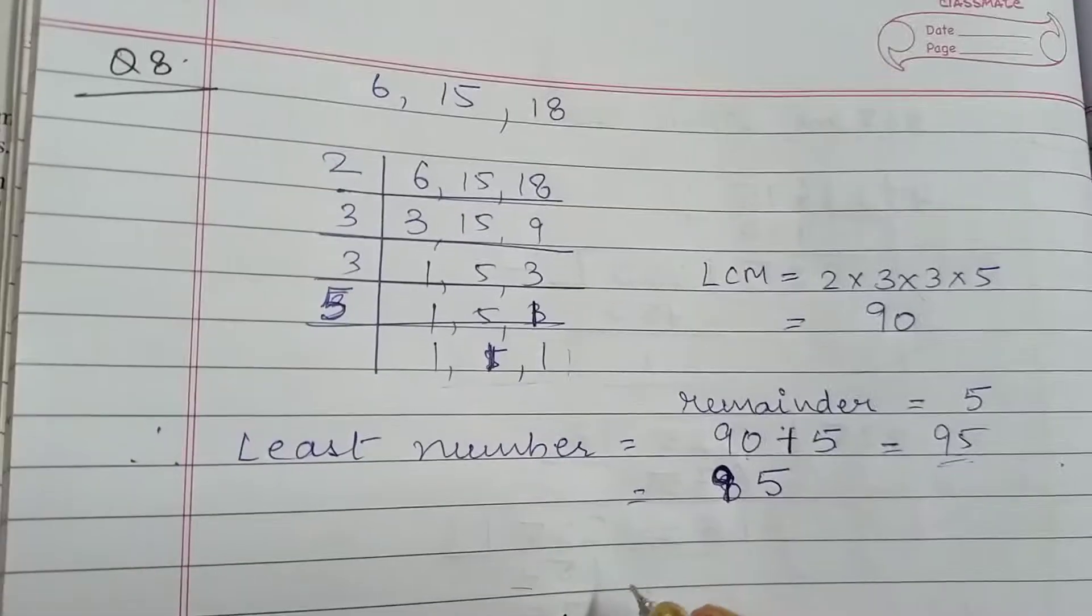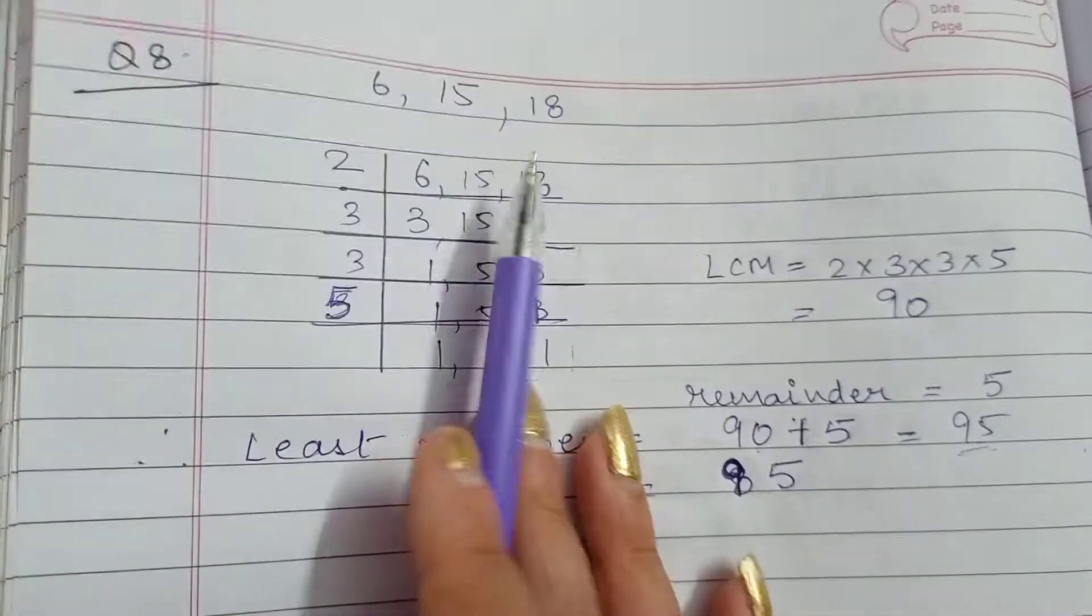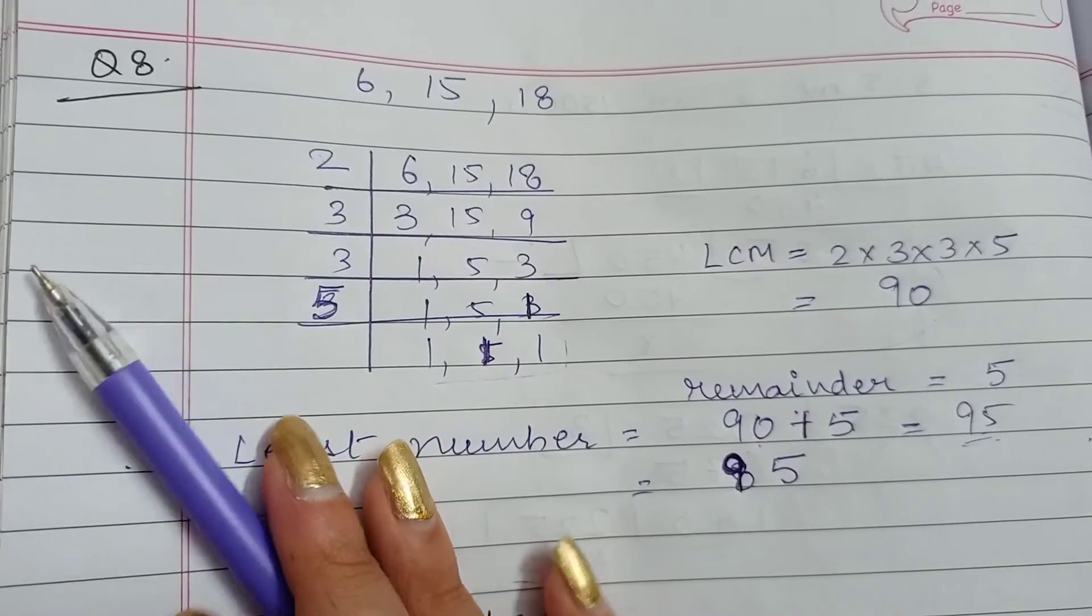95 is the least number which when divided by these 3 numbers will leave the remainder as 5. So this was your question number 8 of exercise 3.7.